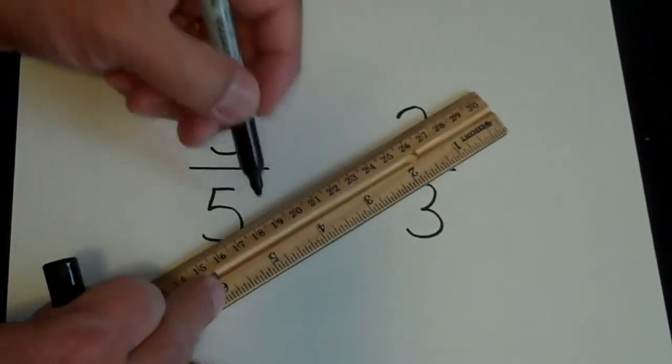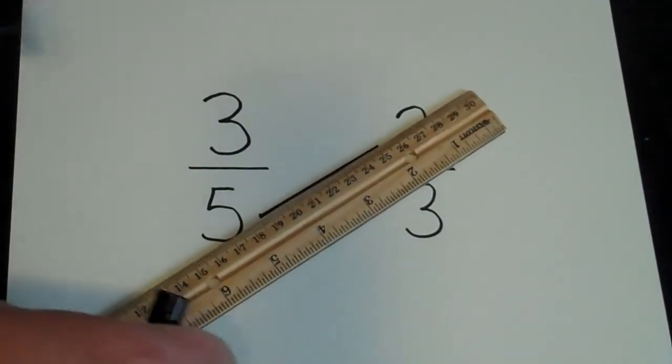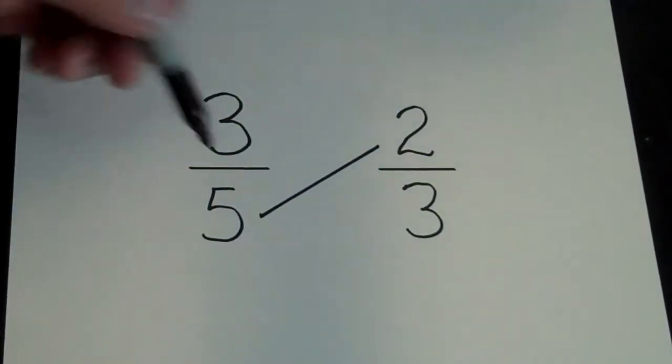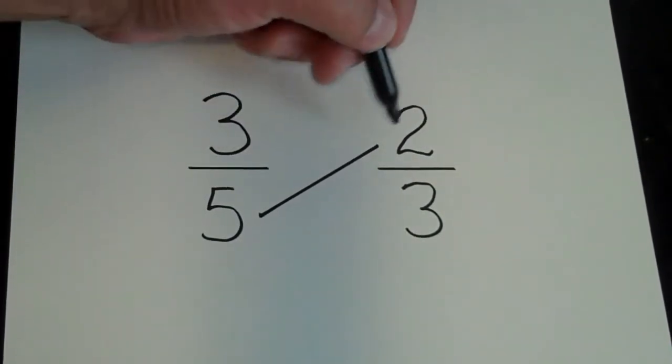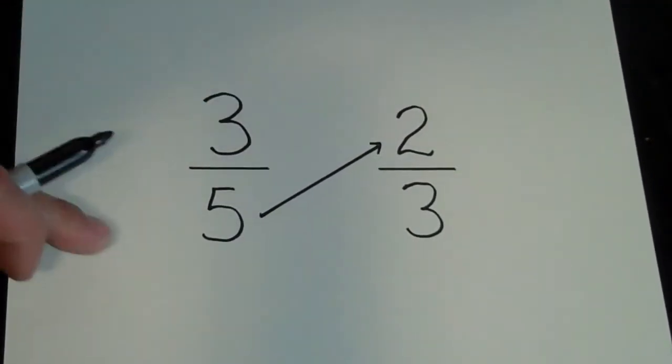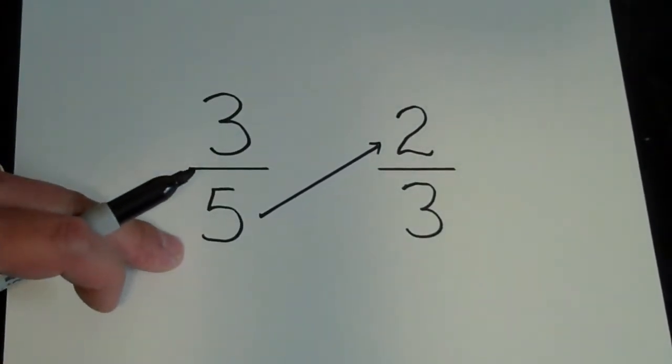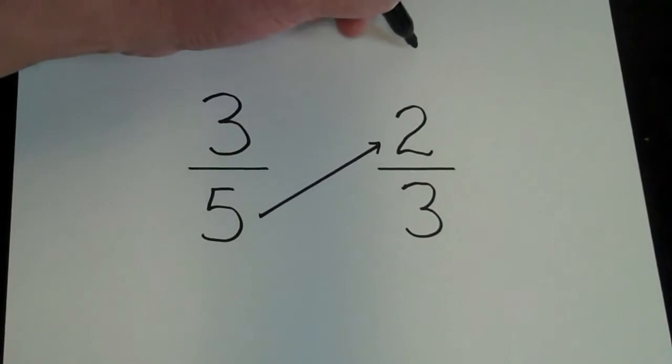What I do is, you don't have to draw a line, but I just draw a line to show that I'm going to multiply. So 5 times 2, and I usually draw an arrow like this to show which direction I'm multiplying because you'll need to know where to put the answer. So 5 times 2 is 10.